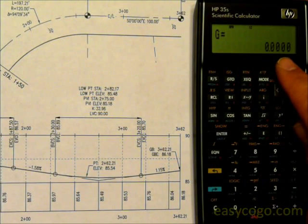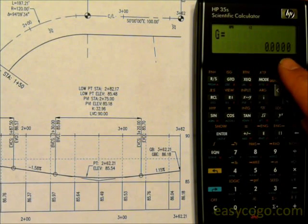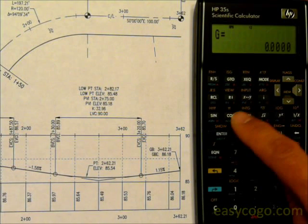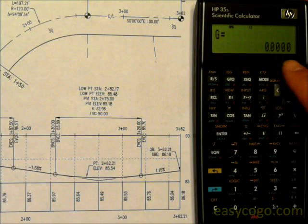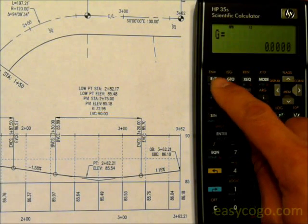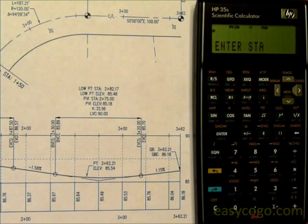It shows us the grade on the vertical curve at that point. Since it was the low point, that's where it changes from going down to up, so we get a zero - it's flat there. Press RS.